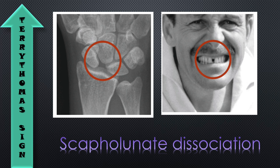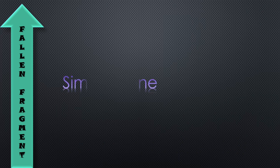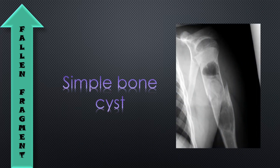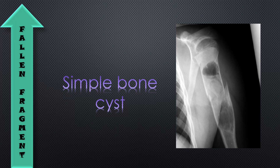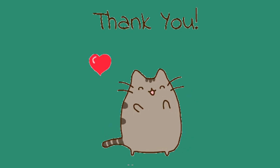The next one is the fallen fragment sign, seen in a simple bone cyst, also called a solitary bone cyst. In this picture we can see that one fragment has fallen from the arm — the fallen fragment sign is seen in a simple bone cyst. That's all for today, thank you.